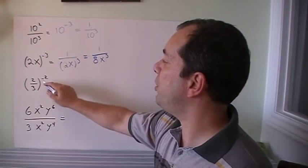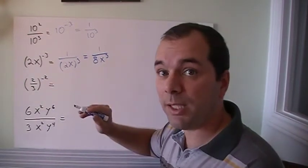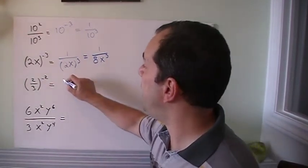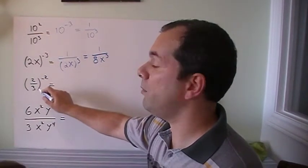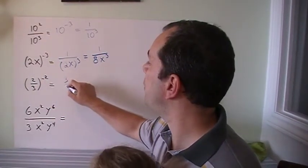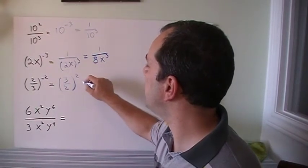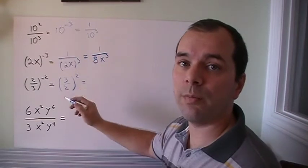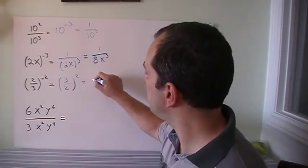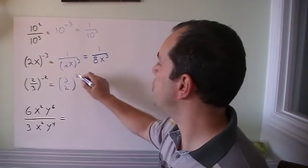This one: 2 over 3 to the negative 2. I'm going to take the negative exponent one more time, and the 2 is going to go to the bottom and the 3 is going to go to the top. I'm going to make 3 over 2 squared. And now I need to square them. 3 squared is 9, 2 squared is 4.